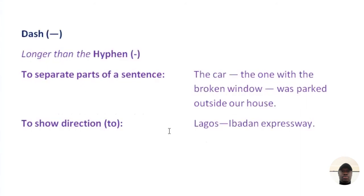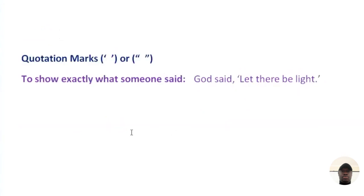The dash is longer than the hyphen and is used to separate parts of a sentence. For example: 'The car — the one with the broken window — was parked outside my house.' The dash can also be used to show direction. For example: 'Lagos–Ibadan expressway,' where the dash means 'to,' indicating direction.